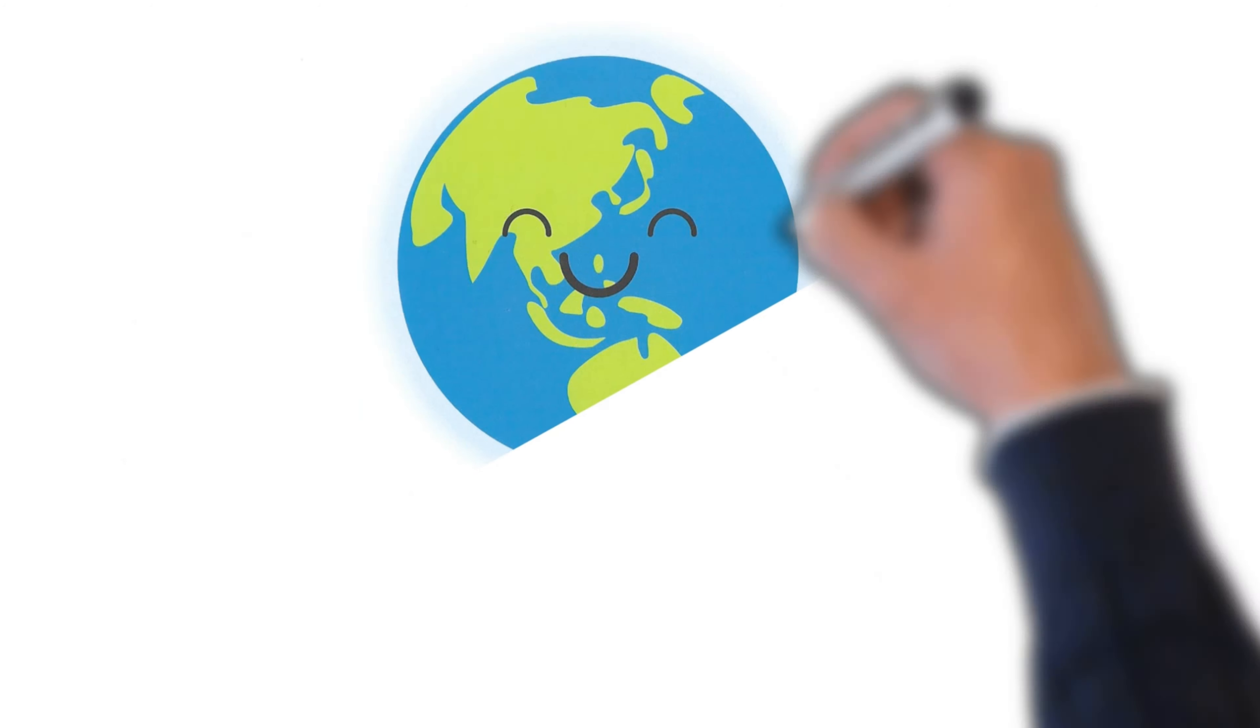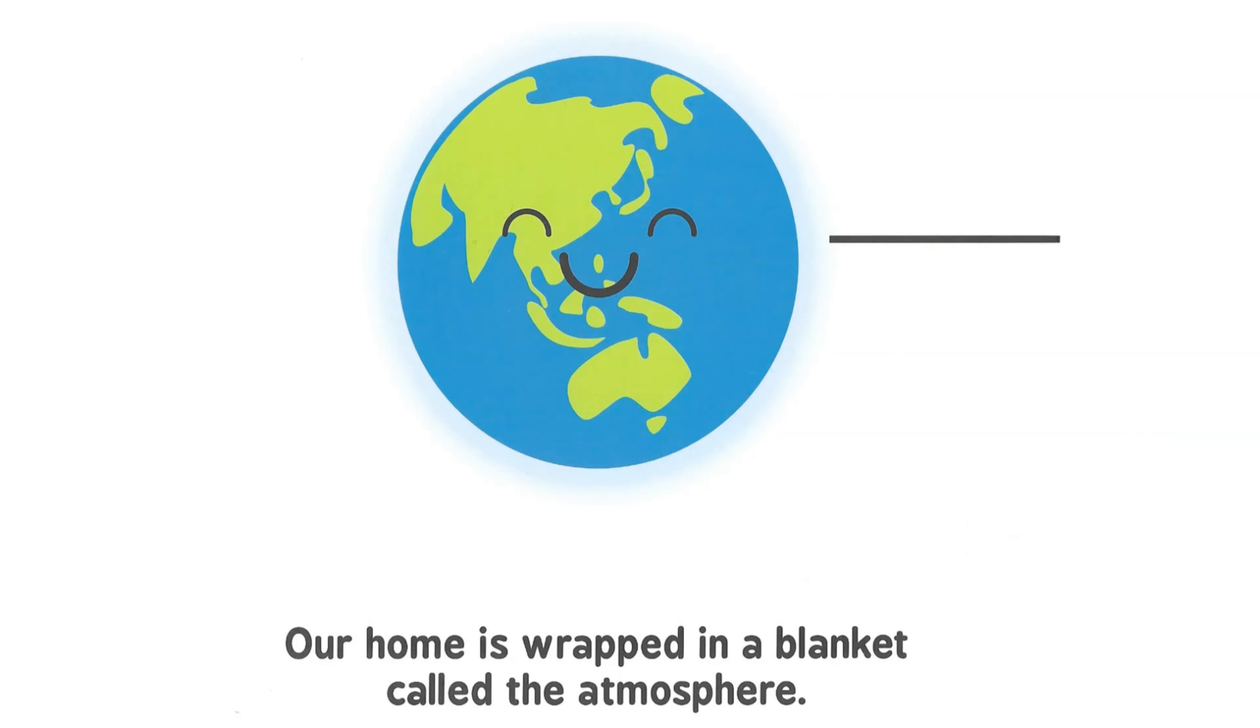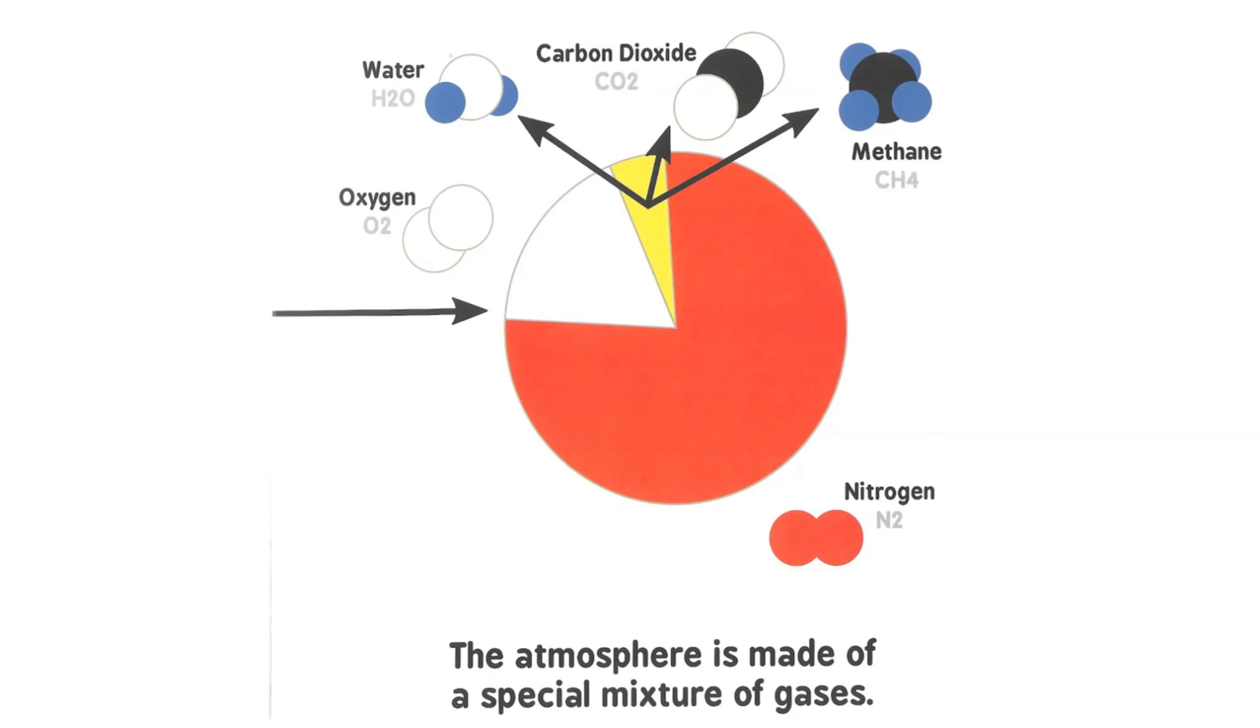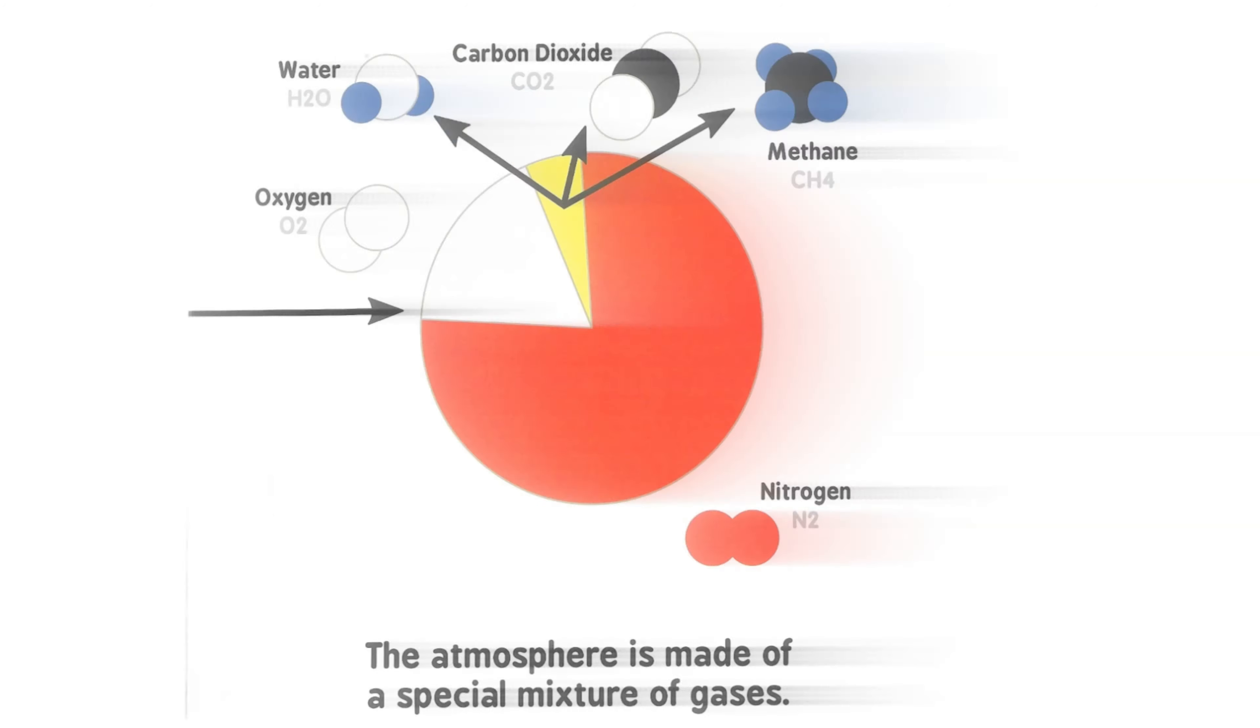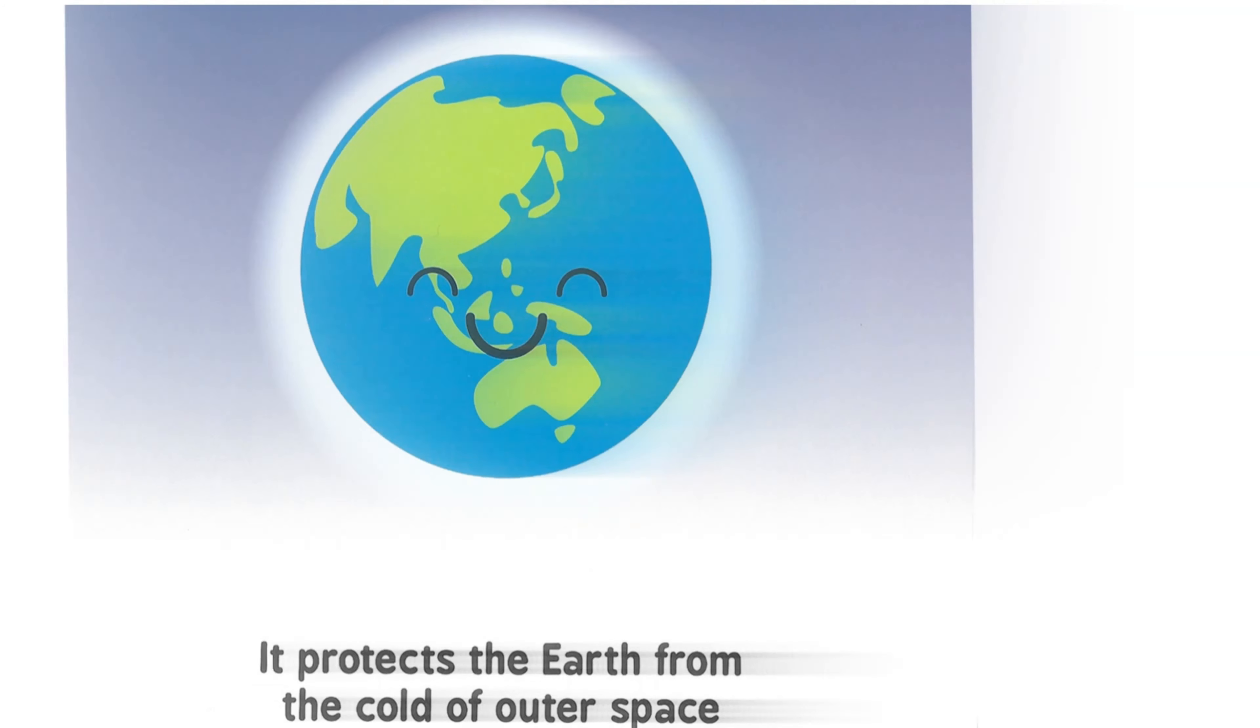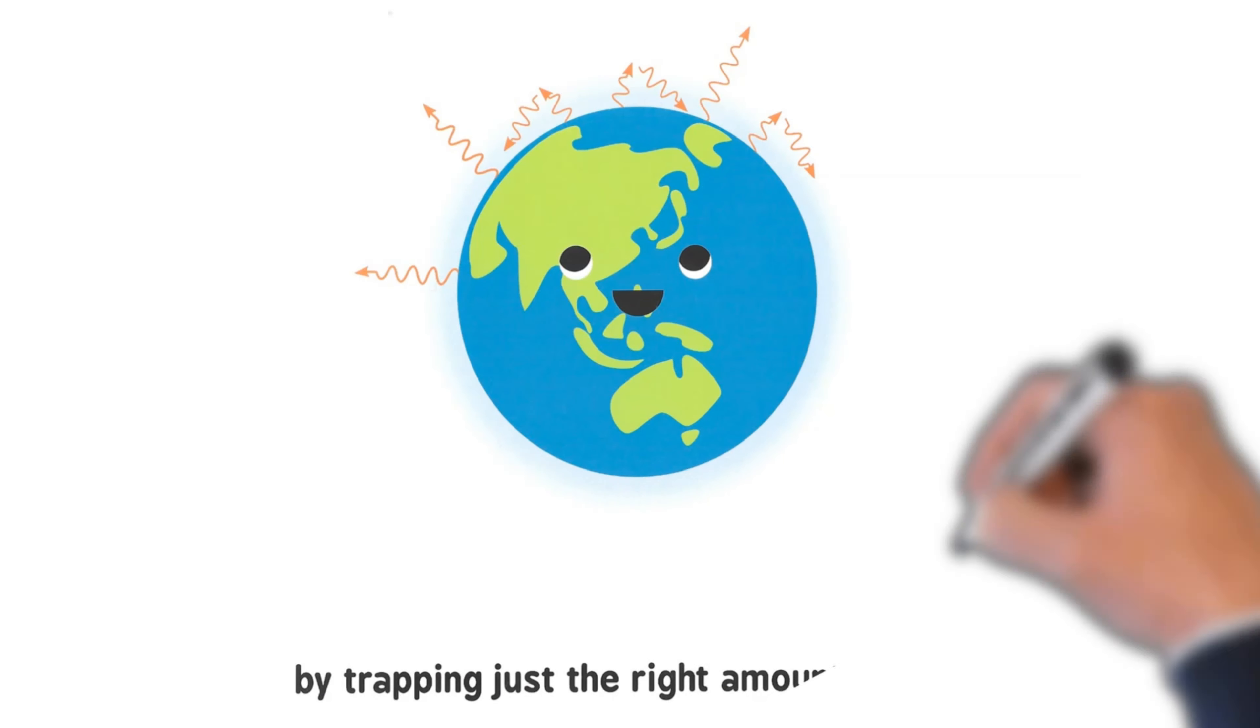Our home is wrapped in a blanket called the atmosphere. The atmosphere is made of a special mixture of gases. It protects the Earth from the cold of outer space by trapping just the right amount of heat.